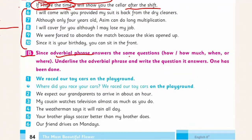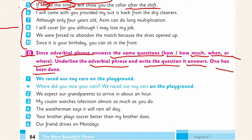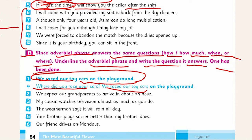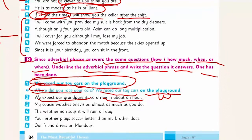Section B: Since adverbial phrases answer the questions how, how much, when, or where — underline the adverbial phrase and write the question it answers. One has been done for you. For example: 'We raced our toy cars on the playground.' Where did you race your cars? 'We accept our grandparents to arrive in about an hour' — when do you expect your grandparents?